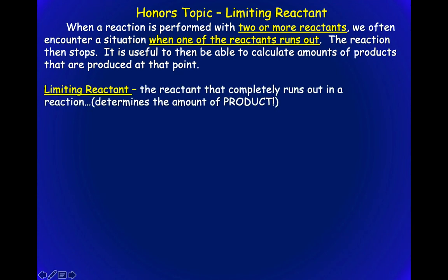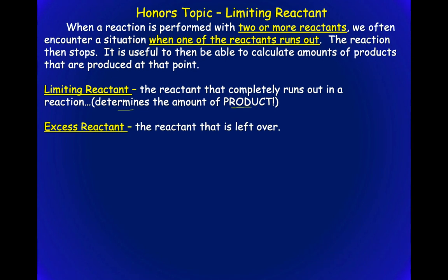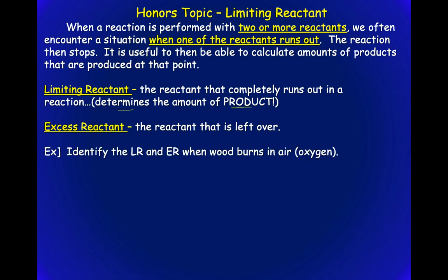First, let's define a couple of things. The limiting reactant is the reactant that completely runs out after the reaction ends — it determines the maximum amount of product you can make. Second, the excess reactant (or reactants) is what's left over after the limiting reactant is used up. For example, when burning wood in a fireplace, the wood is the limiting reactant and the oxygen in the air is the excess reactant.